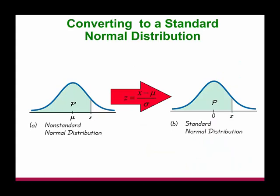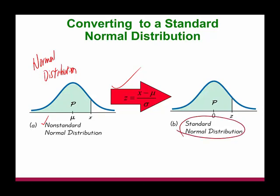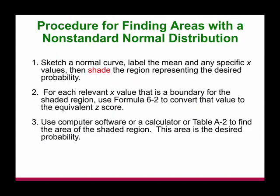So given any normal distribution, we're typically talking about a non-standard normal distribution. You basically just convert it using the z-score formula to convert it to standard normal distribution. And then from there, we'll be able to find out the probability according to table A2. So we do use the z-score formula to standardize the standard normal distribution. Procedure to find the area with a non-standard normal distribution.